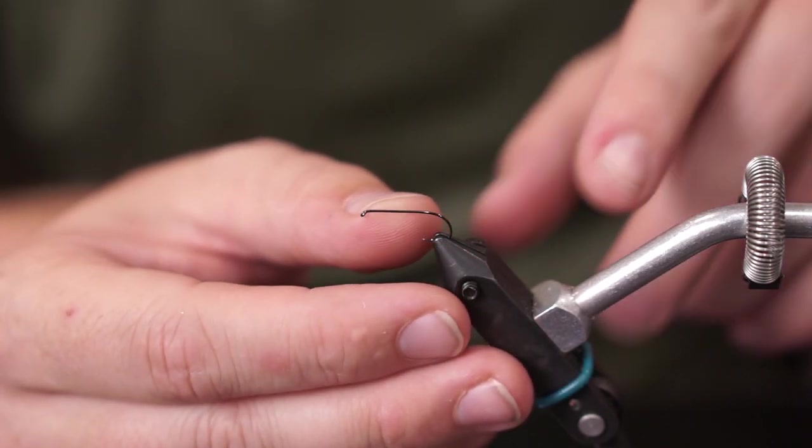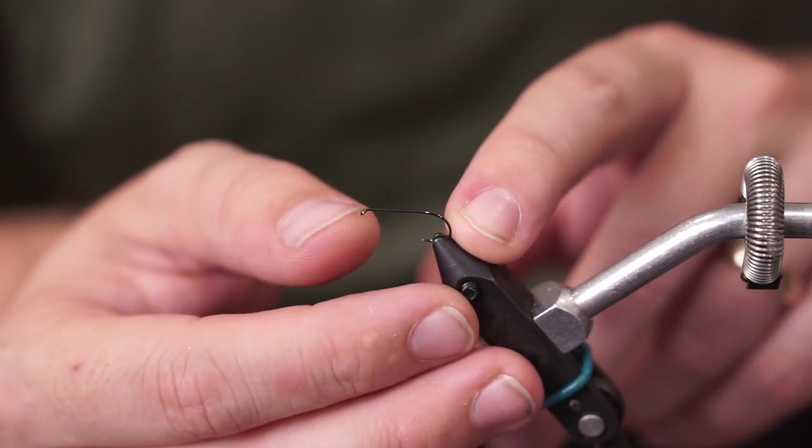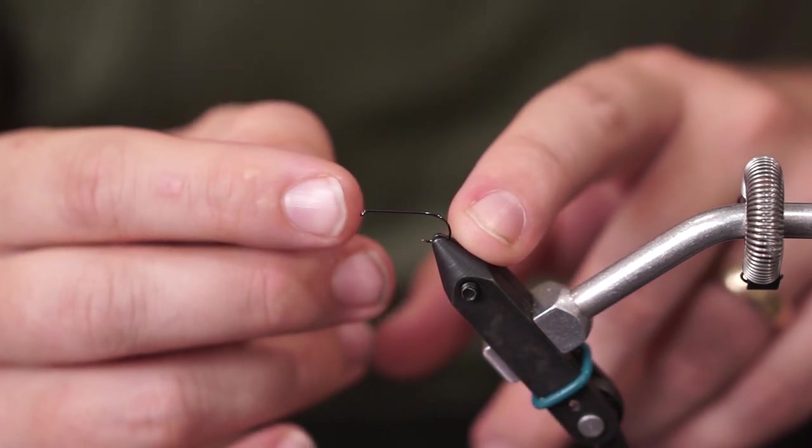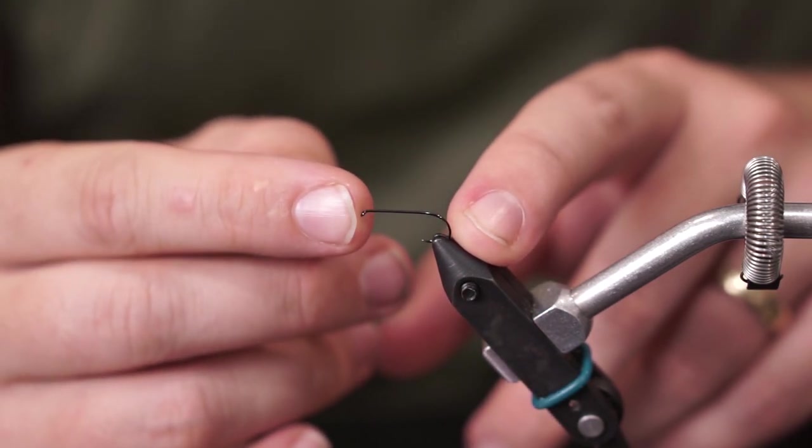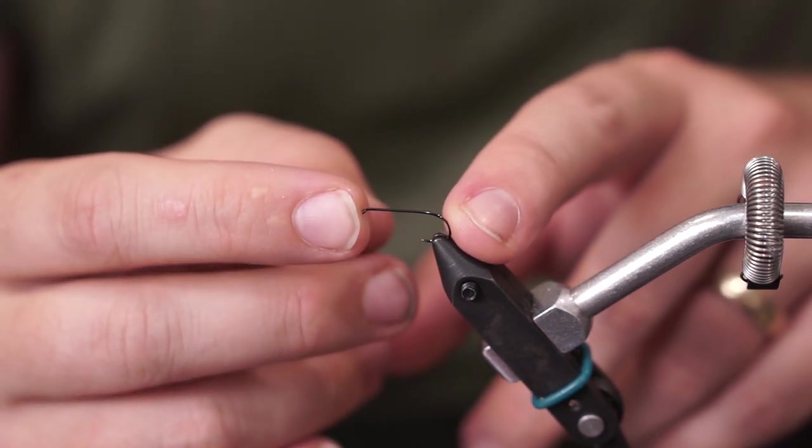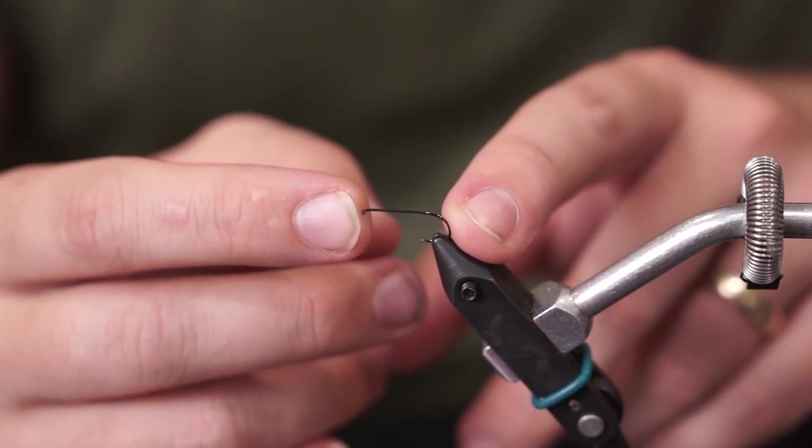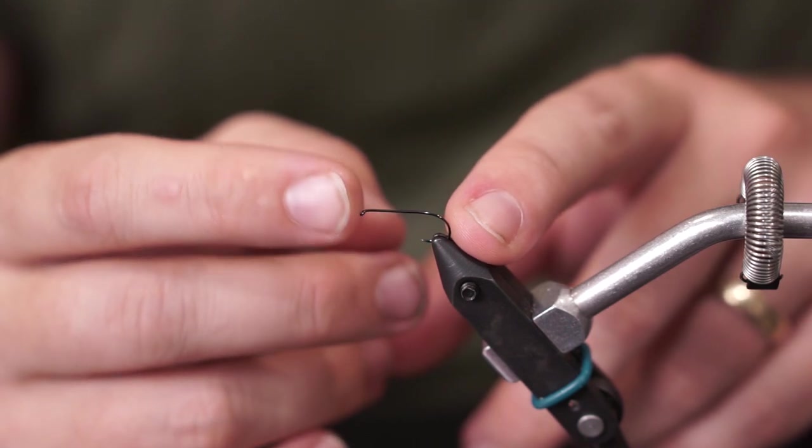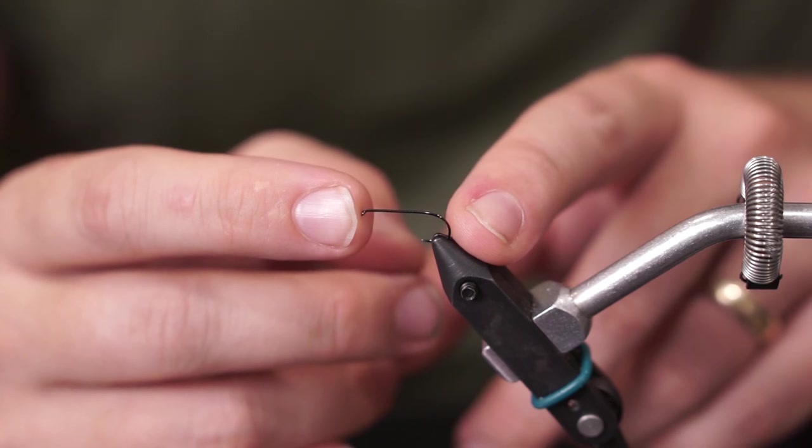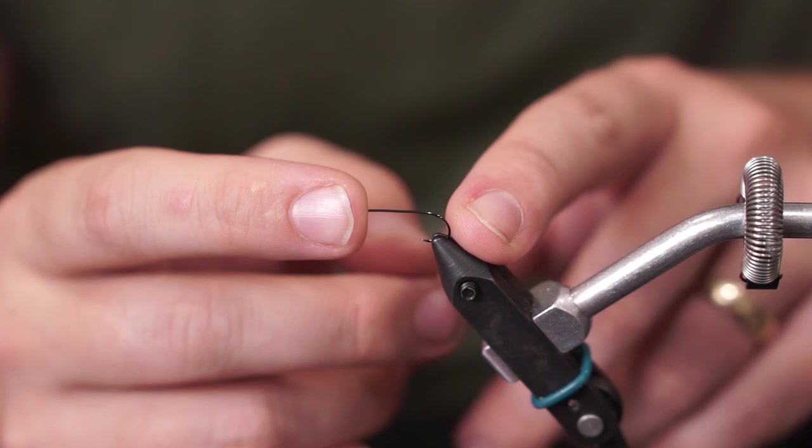For this we have our dry fly hook that we've been using a lot for our beginner series and that's a size 10. This is a nice size to learn on and happens to be a pretty good size to imitate a variety of dry flies that you may see. This particular hook is a Gamakatsu dry fly but you can use whatever dry fly hook that you have available to you or is your preference.